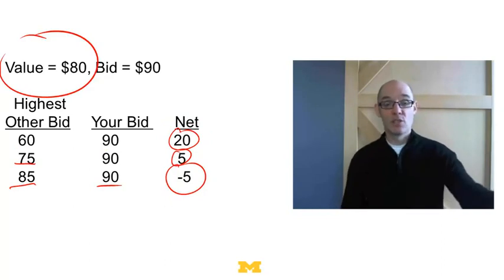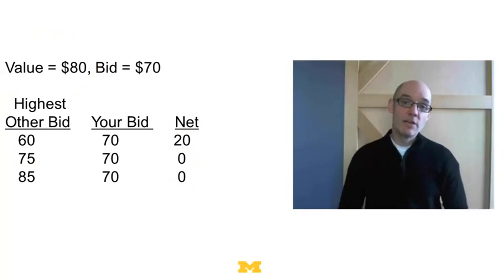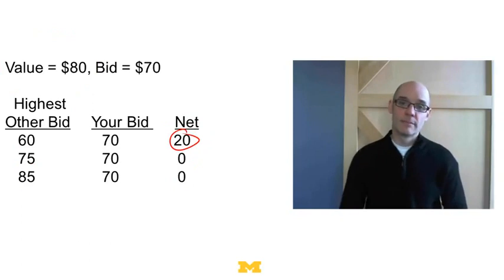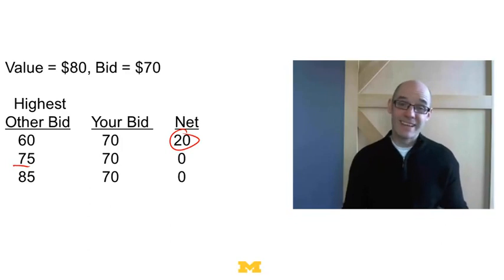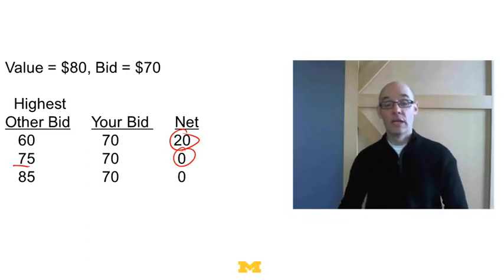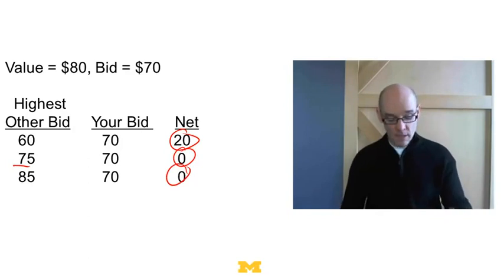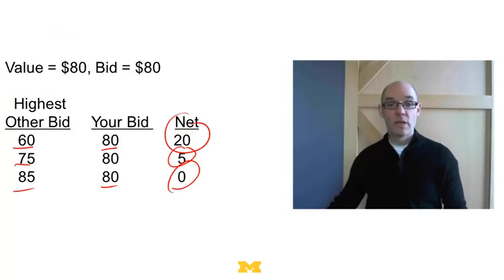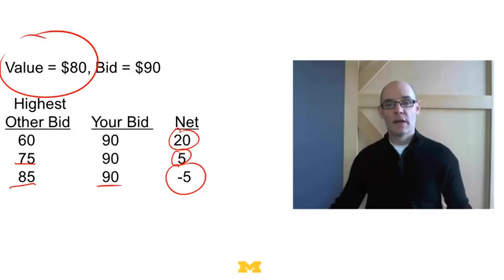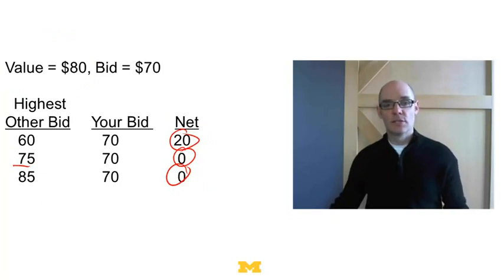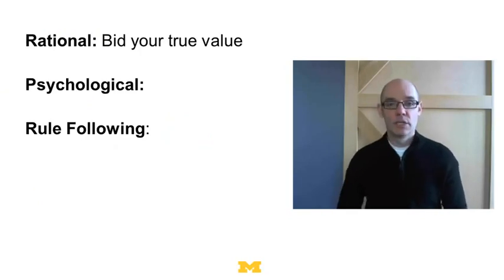But do you want to underbid? Suppose you bid 70. If the highest other bid is 60, you get it for 60 and your net is 20. But if the second highest bid is 75 and you bid 70, you're not going to get it — and you'll wish you'd bid at least 76. You'd get 0, whereas if you'd bid 80 you'd have gotten it for 75 and made $5. So the rational bidder in a second price auction should bid their true value.